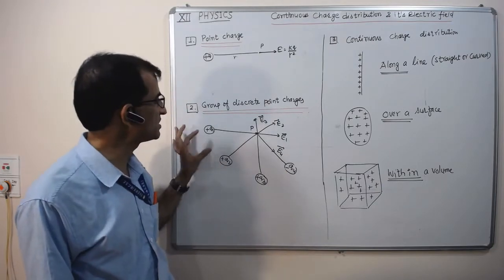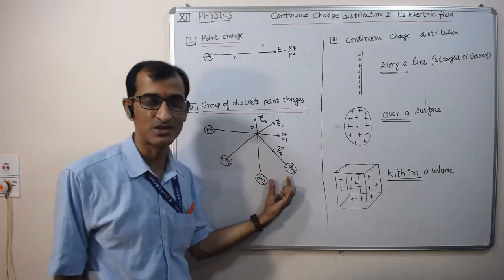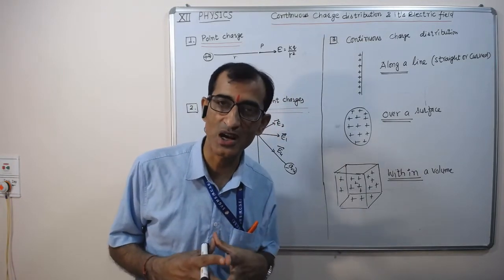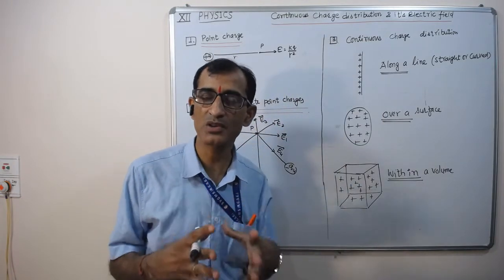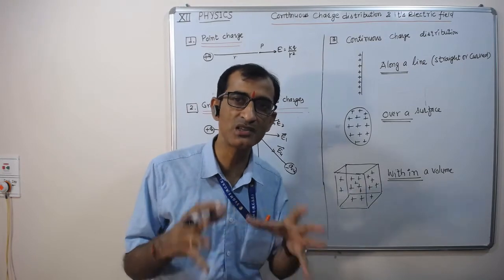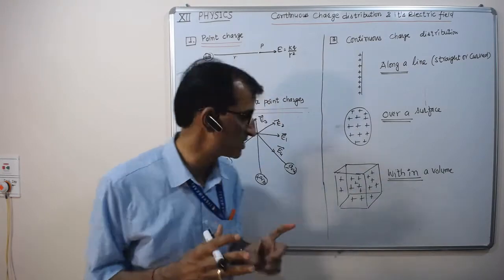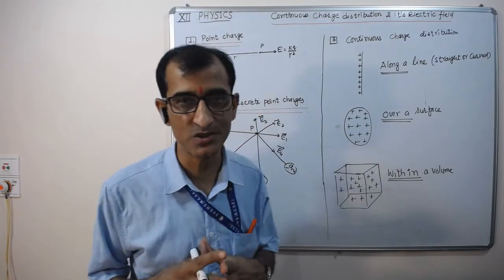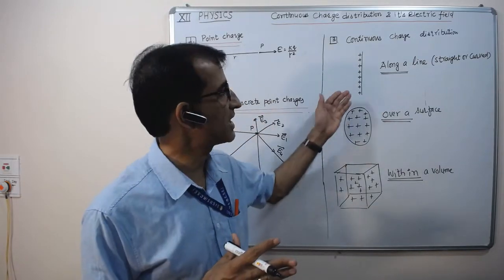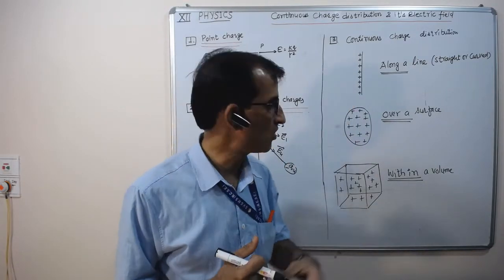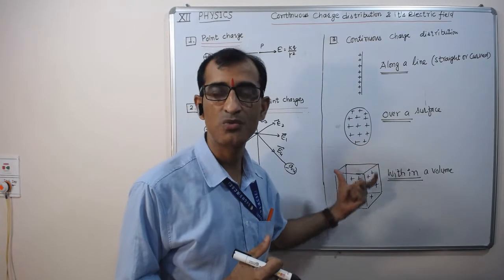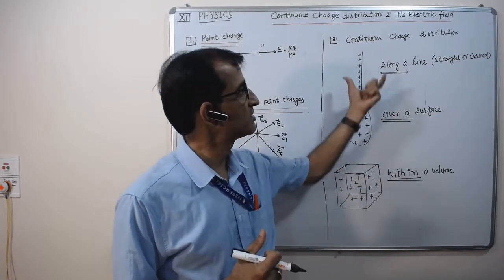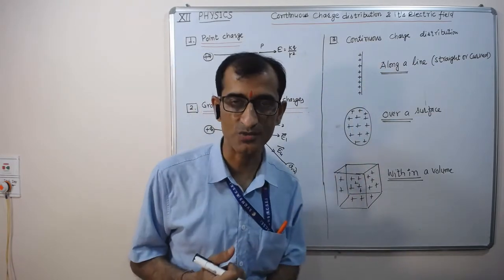The space between these point charges is large. Today we discuss another system of charge in which an enormous number of charges — billions and trillions of these discrete point charges — are placed with very little space along a line, which may be straight or curved, or over a surface or within a volume. This is known as continuous charge distribution.